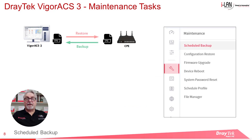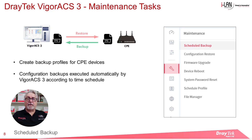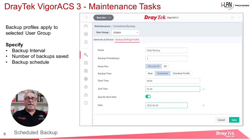Within the Scheduled Backup menu, we can create backup profiles for CPE devices. Once configured, CPE configuration backups are executed automatically by VigorACS3 according to a time schedule. The first step in running scheduled backups is to create a backup setting profile, which is linked to a particular user group. In this example, we've selected the SD-WAN user group.